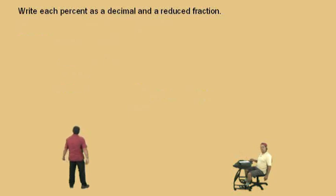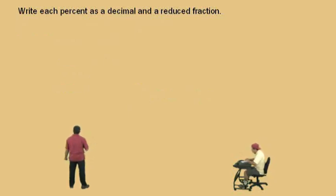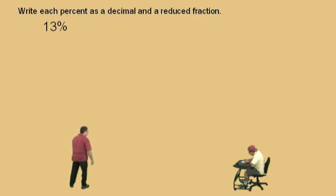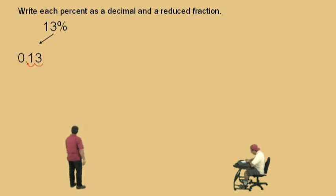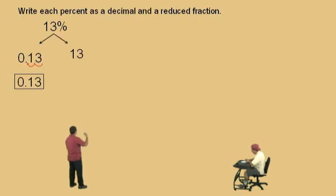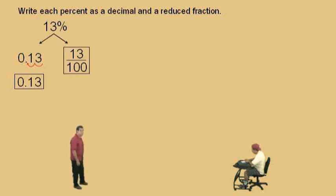Anyway Charlie, let's do a problem now. Write each percent as a decimal and a reduced fraction. So 13%, Charlie — we're going to write it as a decimal, so we move it which way? To the left 2 times. That's right, 2 times, and we get 0.13 — 13 hundredths. Makes sense. And so as a fraction, 13% is 13 over 100. That's 13 hundredths. There you go, that's it.